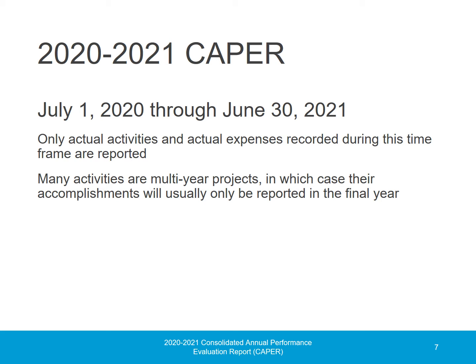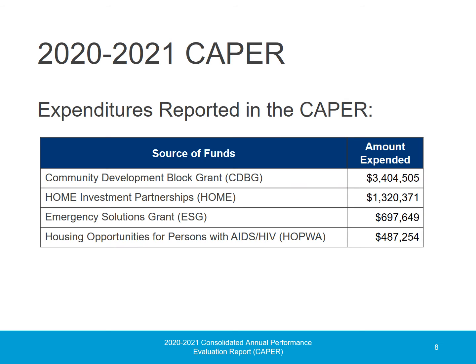The Program Year 2020 CAPER reports on the expenses and accomplishments recorded between July 1, 2020 and June 30, 2021. Many activities are multi-year projects, in which case their accomplishments will usually only be reported in the final year, with some exceptions such as community service activities. During the course of the program year, approximately $5.9 million was expended, including approximately $3.4 million in CDBG funds, $1.3 million in HOME funds, $697,000 in ESG funds, and $487,000 in HOPWA funds.